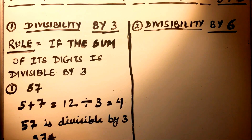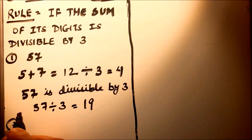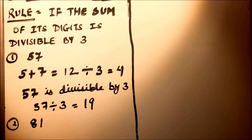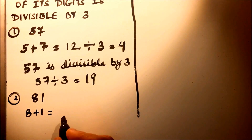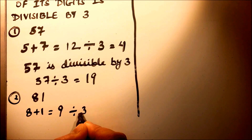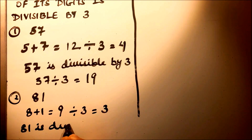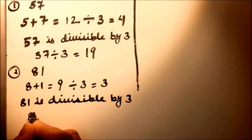57 divided by 3 is 19. Now let's take another example: the number 81. We'll check whether this is divisible by 3 or not. We add the two digits, and we get 9, which is divisible by 3. So 81 is divisible by 3. 81 divided by 3 is 27.